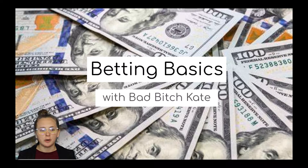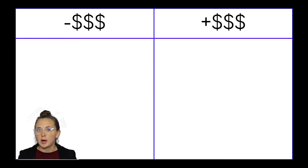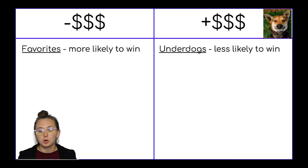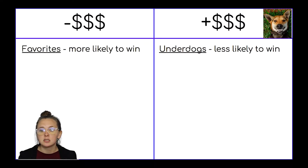A couple of things to know about betting lines: there's negative betting lines and positive betting lines. I'm going to go over the difference between the two. Negative betting lines are our favorites — they're more likely to win. Positive money lines are underdogs — they're less likely to win.